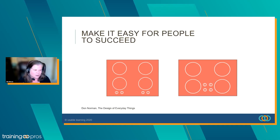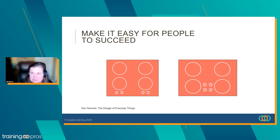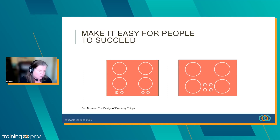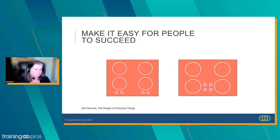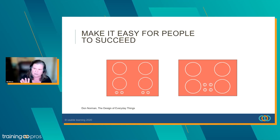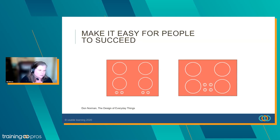Which stove do you think is going to work better and have a lower error rate — the one on the left or the one on the right? Now it has its own issues in that you have to reach over a burner to do the controls. But if the goal is to turn on the right burner, we're going to get a more reliable result with the one on the right. And so that's the big issue with environment.